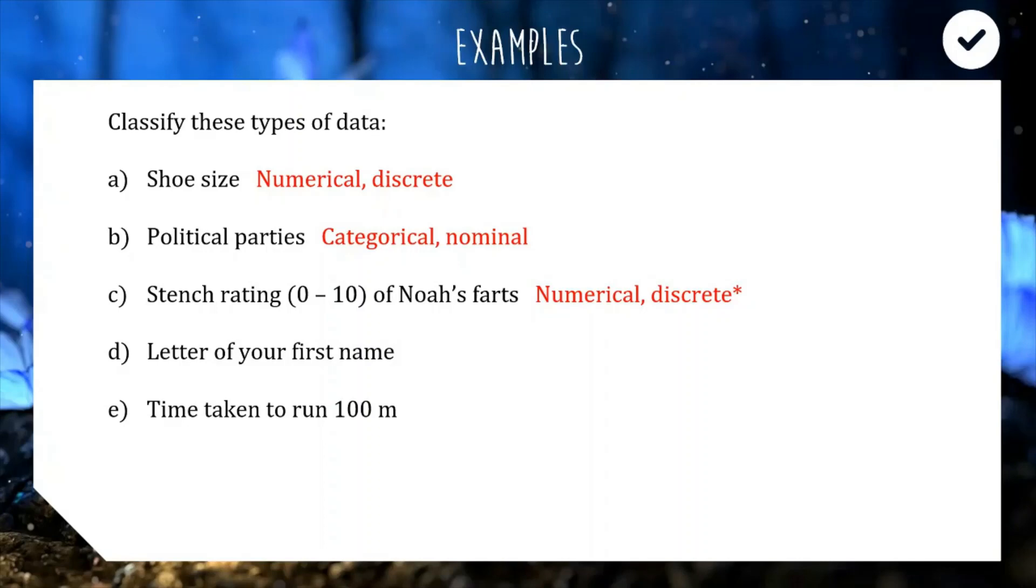For D we have the letter of your first name, so a letter is not a number so it's going to be categorical and we ask ourselves is there a clear order for the letters, yes there is it's called alphabetical order. So D would definitely be categorical and it would be ordinal because we can order them.